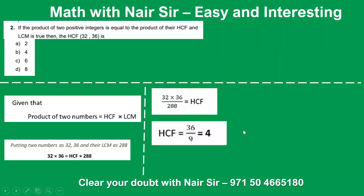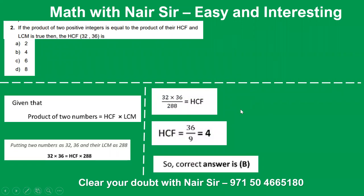You should know the divisibility rules for 2, 3, 4, 5, 6, 7, 8, and 9 — know the minimum divisibility rule for each.